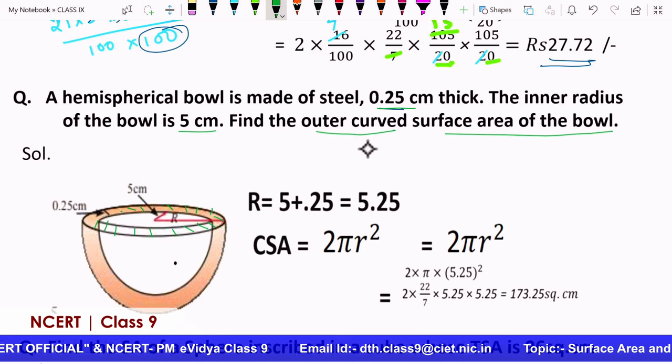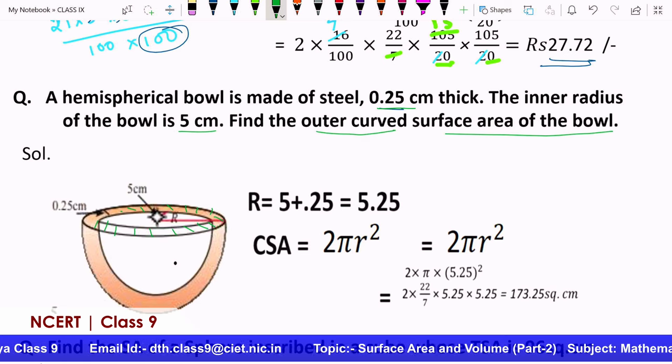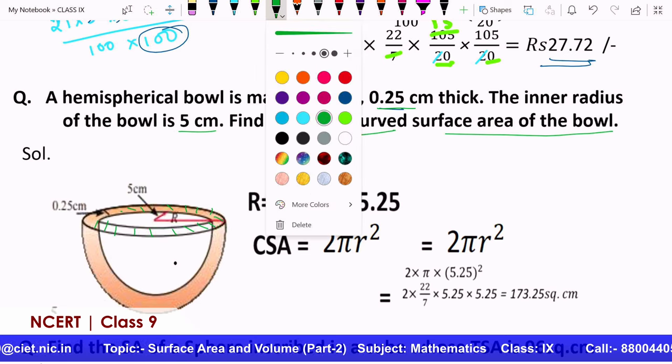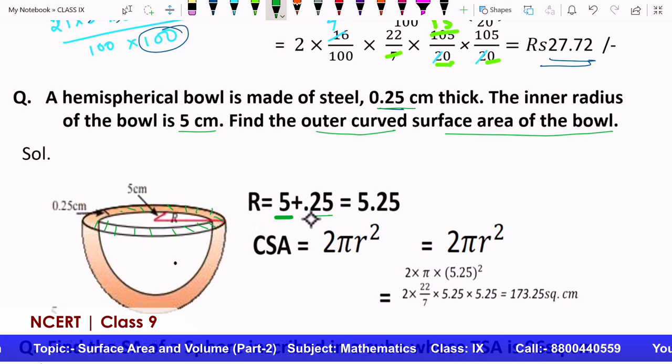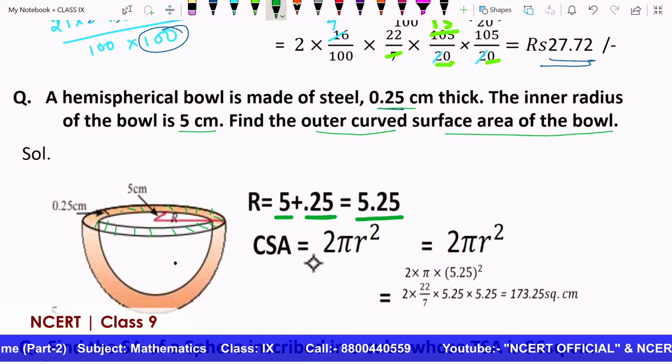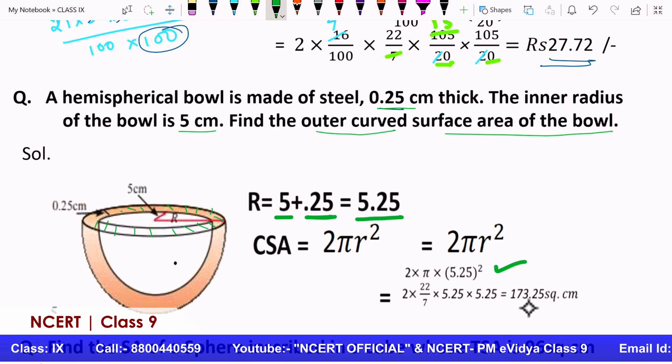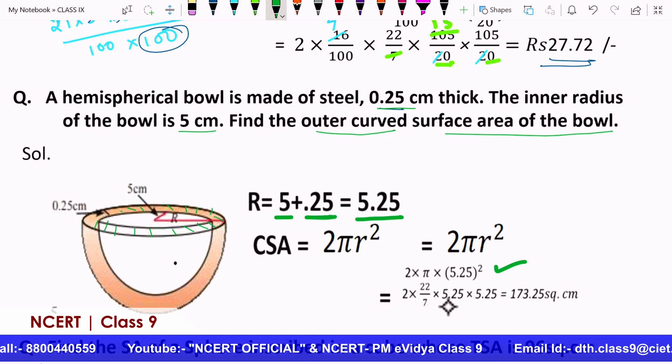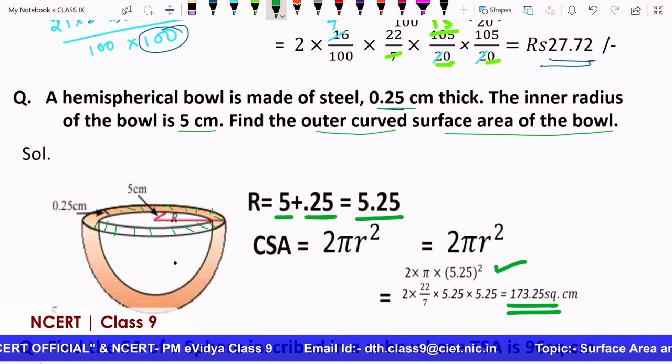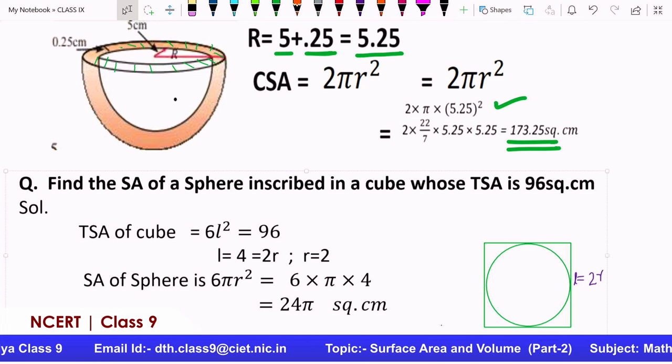The inner part has a different radius, outer part has a different radius. The question is you have to find the outer part's curved surface. If you have to find the outer part's curved surface, you need its radius. So what will that radius be? It will be just 0.25 more than the inner part. What is the inner part's radius? The inner part's radius is 5, add 0.25 to it. So that comes out to be 2πr², and now you can find that 7 cancels this 525, and that number comes out to be 173.25 square centimeters. So these are the questions from your textbook based on surface area formulas.